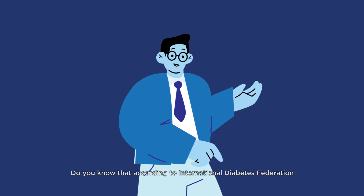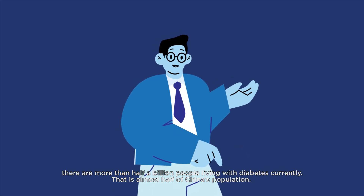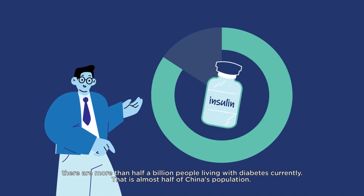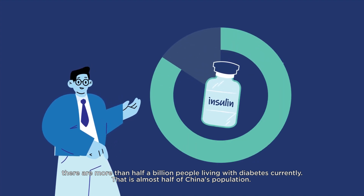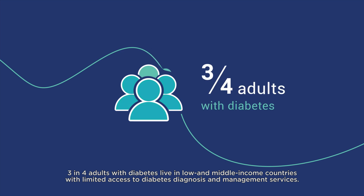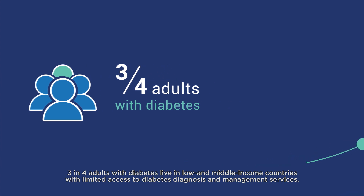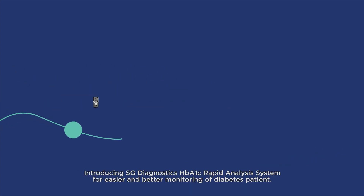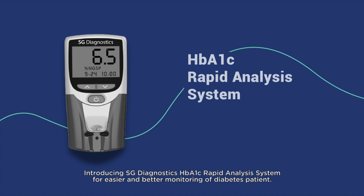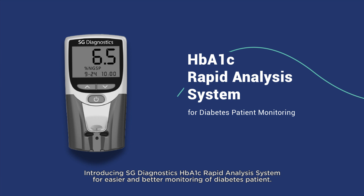According to the International Diabetes Federation, there are more than half a billion people living with diabetes currently — that is almost half of China's population. Three in four adults with diabetes live in low- and middle-income countries with limited access to diabetes diagnosis and management services. Introducing SG Diagnostics HbA1c Rapid Analysis System for easier and better monitoring of diabetes patients.